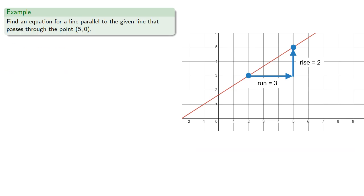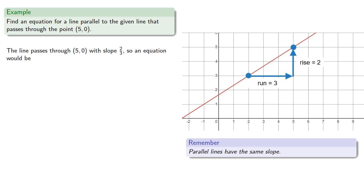And at this point we can do anything at all once we have the equation of a line. So let's find the equation for a line parallel to the given line that passes through the point (5, 0). Remember, parallel lines have the same slope. This line has slope two-thirds, so the line we want passes through (5, 0) with slope two-thirds. So an equation would be y = (2/3)(x - 5).